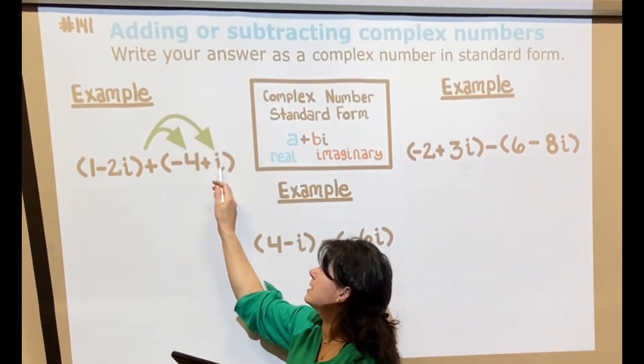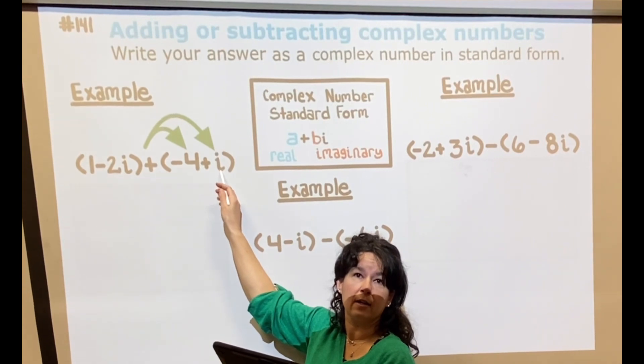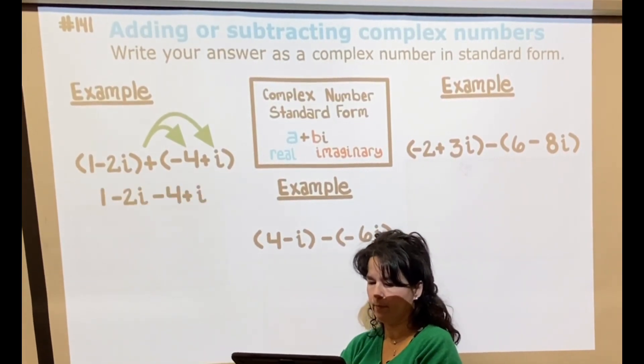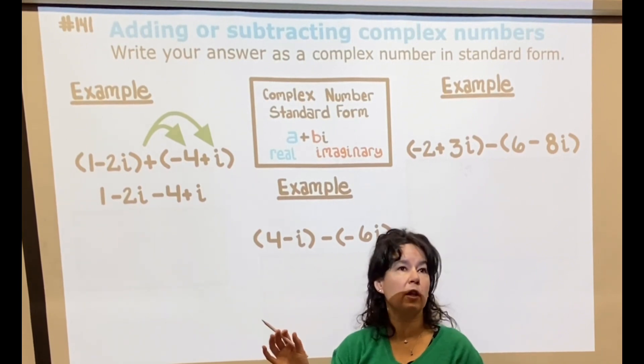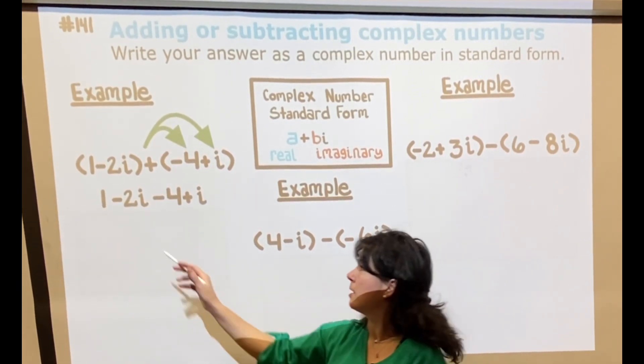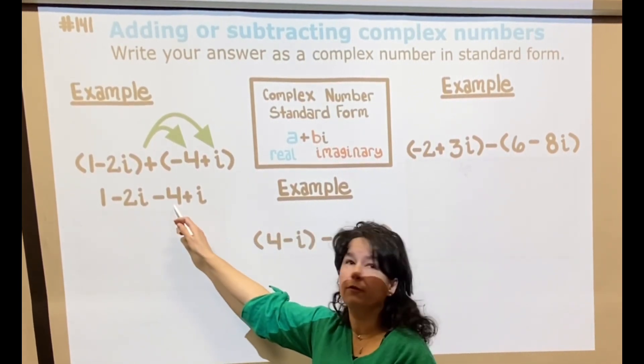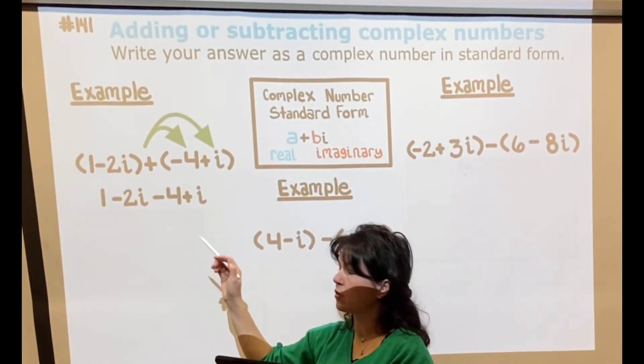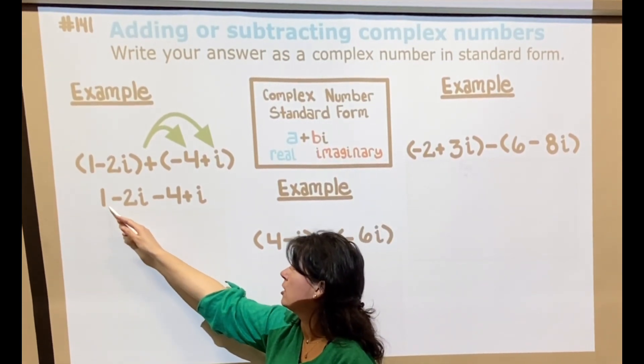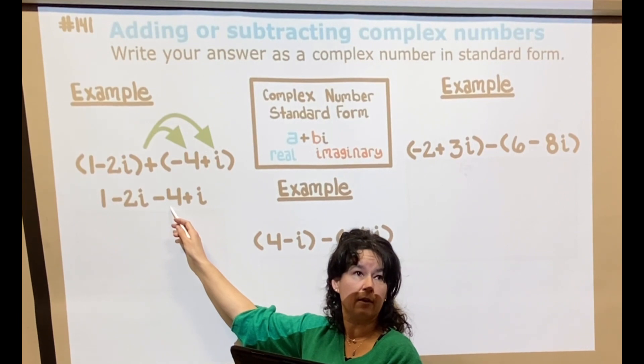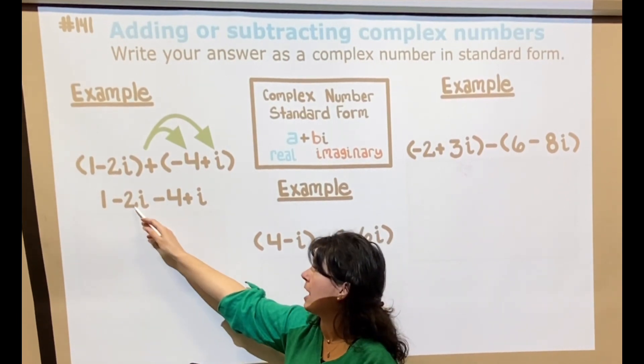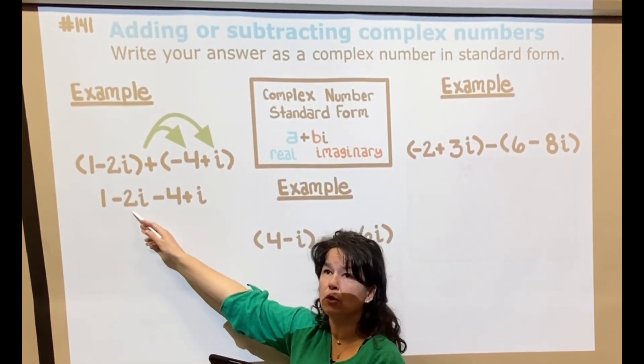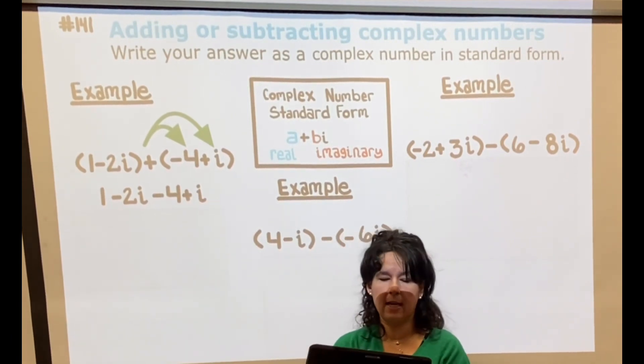Now we're looking for like terms. 1 and negative 4 are like terms, so I'm going to be able to add those together. So 1 minus 4 is negative 3, and then the i's are like terms, so negative 2i's and 1i makes negative i.